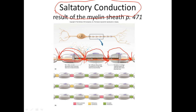In an unmyelinated neuron, every channel has to open individually. In a myelinated neuron, you get a power boost from node to node. After depolarization, there is a refractory period — a point in time where no matter what you do, you cannot trigger another action potential. It's a rest stage before you can fire again.